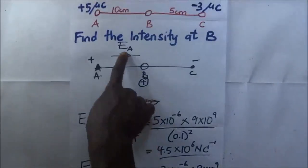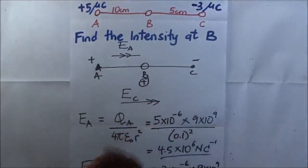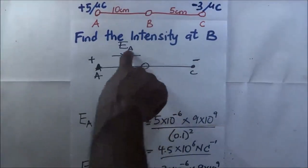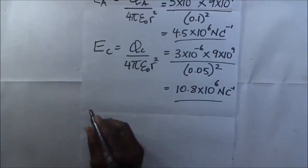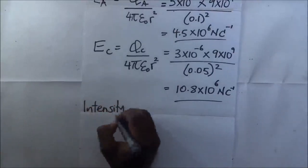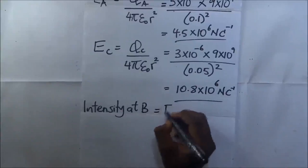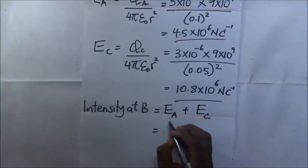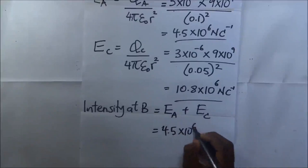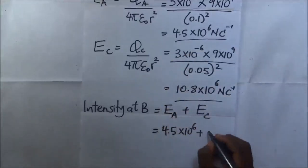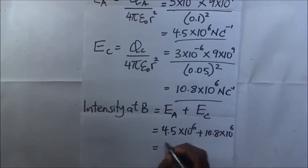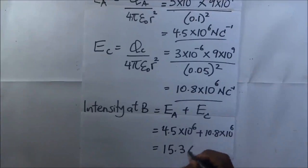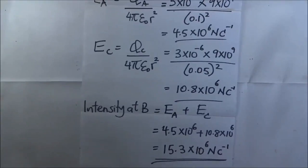Since the intensity due to A and the intensity due to C are acting in the same direction, the total intensity at point B is simply the sum: E_B = E_A + E_C. That gives us 4.5×10⁶ plus 10.8×10⁶, and our answer is 15.3×10⁶ newtons per coulomb. That is the total electric field intensity at point B.